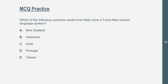Practice question: Which of the following countries would most likely have a Trans-New Guinea language spoken? The correct answer is B, Indonesia. New Zealand would have either Austronesian or Indo-European languages. India has primarily Hindi, which is Indo-European. Portugal has Portuguese, also Indo-European. Taiwan is Austronesian. Indonesia is primarily Austronesian, but it's the only country here that also has Trans-New Guinea languages primarily spoken.